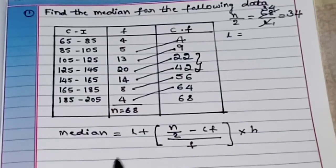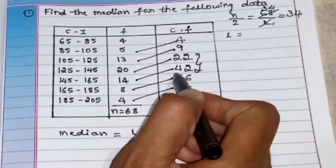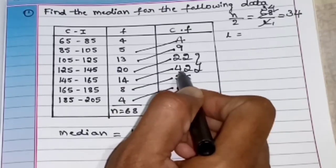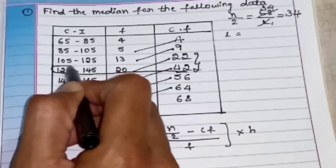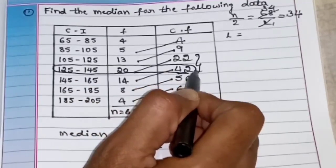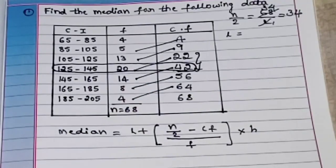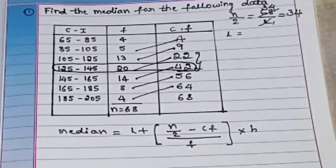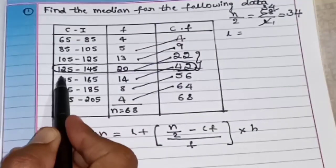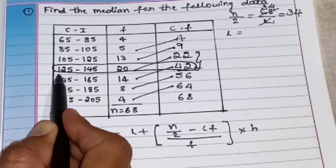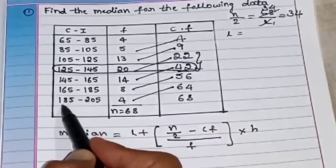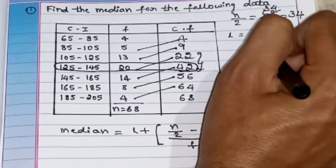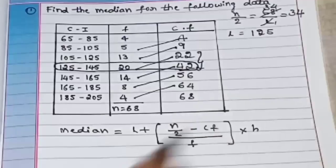We need to choose the bigger cumulative frequency — which is 42. So we choose that as the median class. We have chosen the median class as 125 to 145. Therefore the lower limit of the median class is 125. So L equals 125.